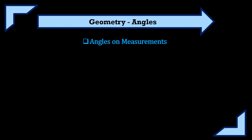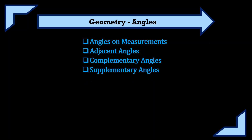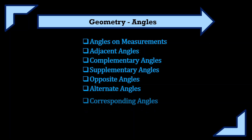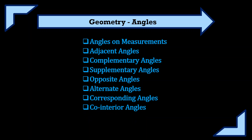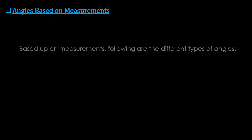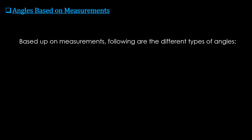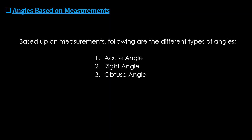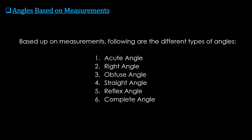The topics covered are: angles on measurements, adjacent angles, complementary angles, supplementary angles, opposite angles, alternate angles, corresponding angles, and co-interior angles. Based upon measurements, the different types of angles are: acute angle, right angle, obtuse angle, straight angle, reflex angle, and complete or full cycle angle.